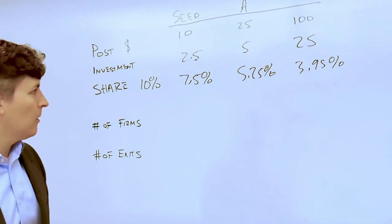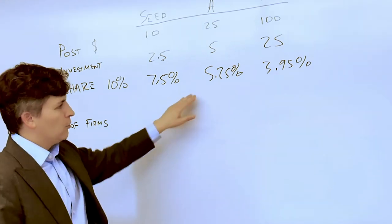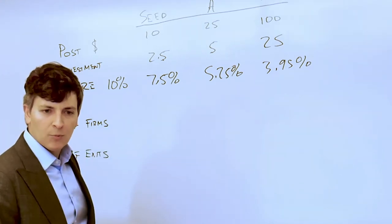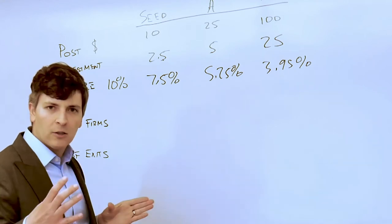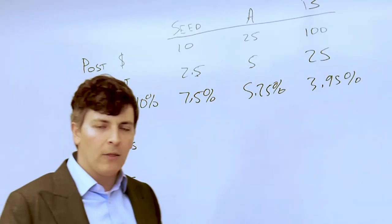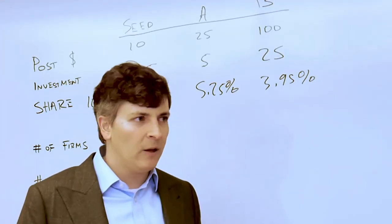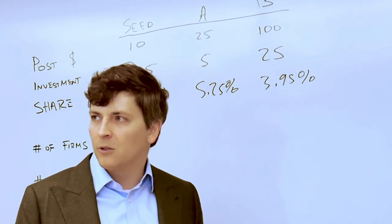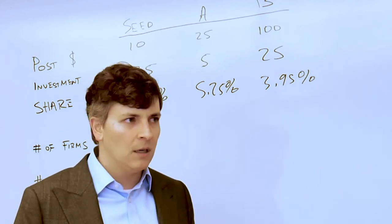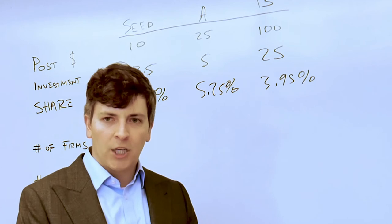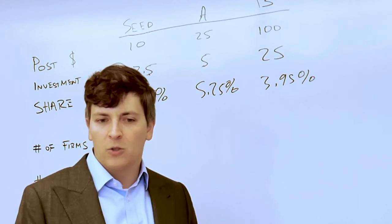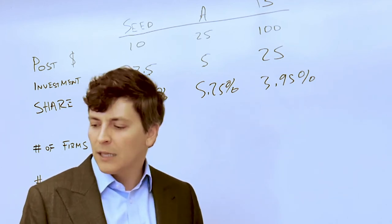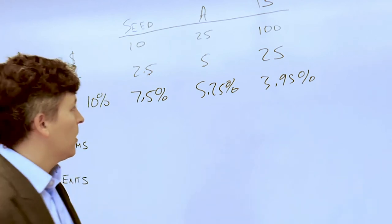So what's happening here? Well, your share is getting smaller but the pie is growing. So while the founder may believe that the ultimate value of the firm might be a hundred million dollars or five hundred million dollars, your share of that five hundred million dollars or hundred million dollars is getting smaller over time because of dilution.